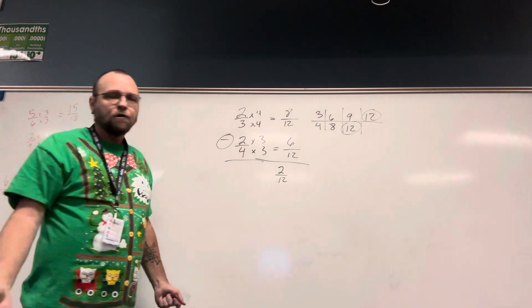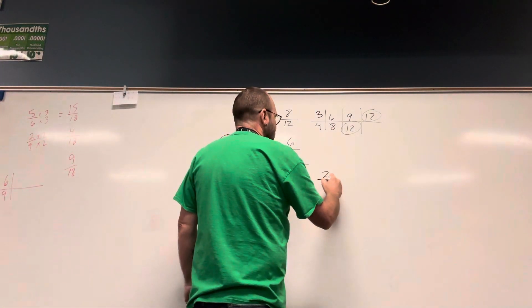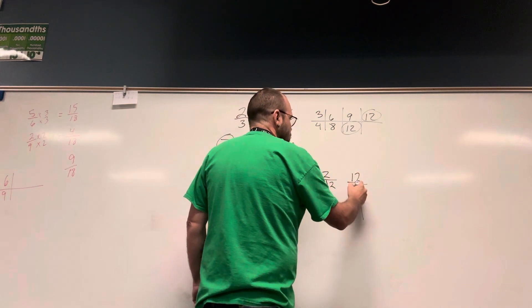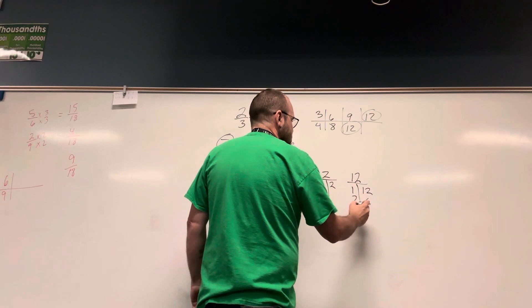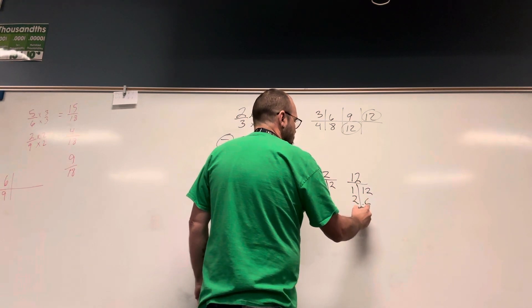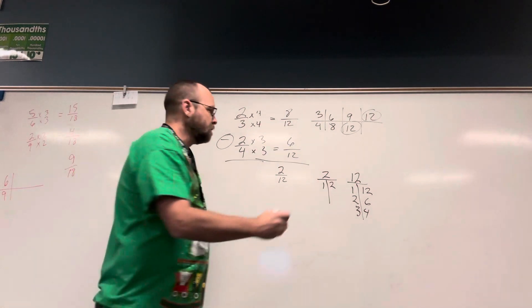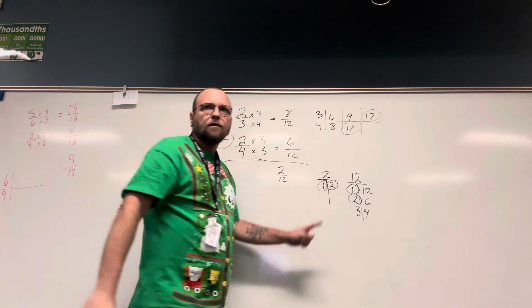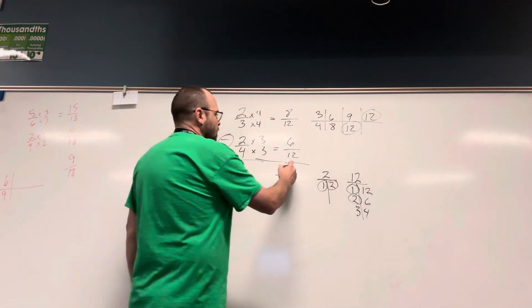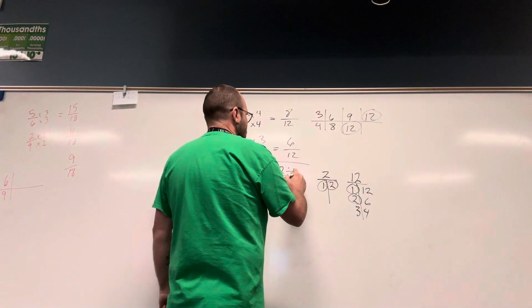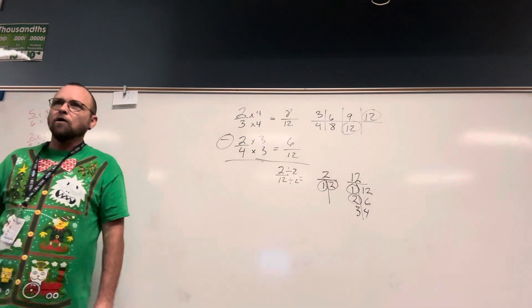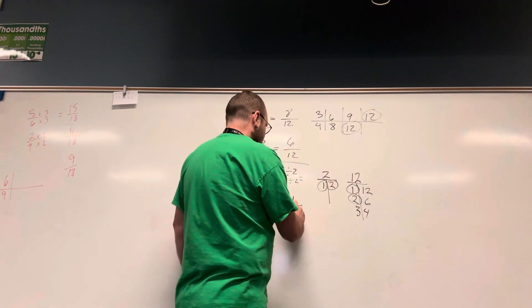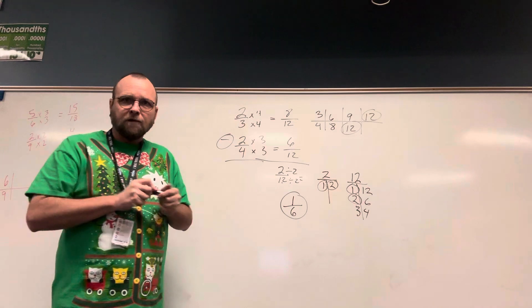I know I can simplify this one. The factors of 2 are 1 and 2. The factors of 12 are 1 and 12, 2 and 6, and 3 and 4. The biggest thing they have in common is 2, so if I divide both by 2: 2 divided by 2 is 1, and 12 divided by 2 is 6. So my final answer is 1 sixth.